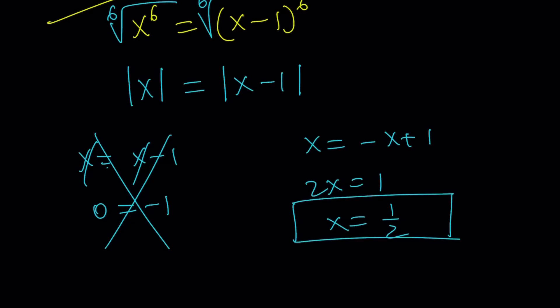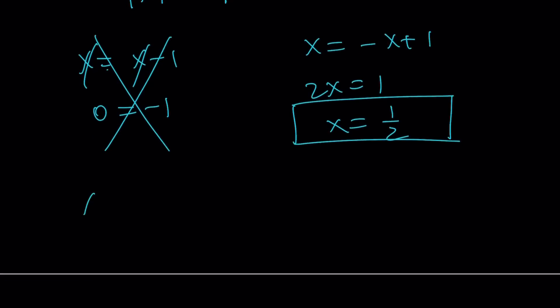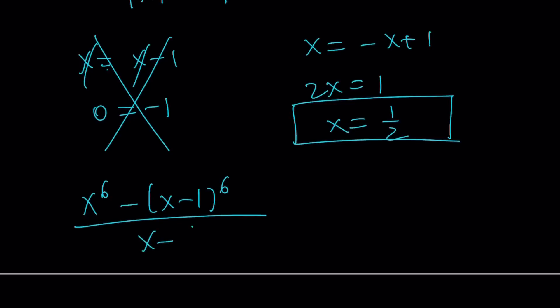So the second method recovers the only real solution. To get the complex solutions from this method, you would divide the polynomial x to the sixth minus x minus 1 to the sixth by 2x minus 1 to obtain the remaining factors, but that involves more work.